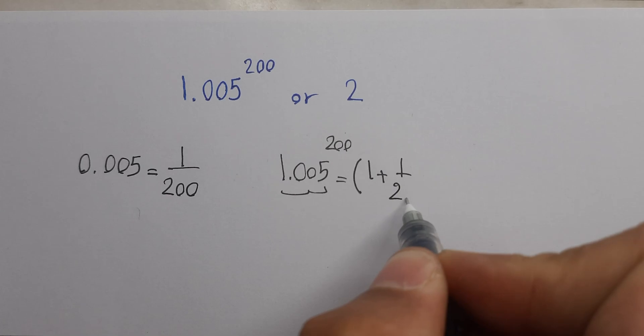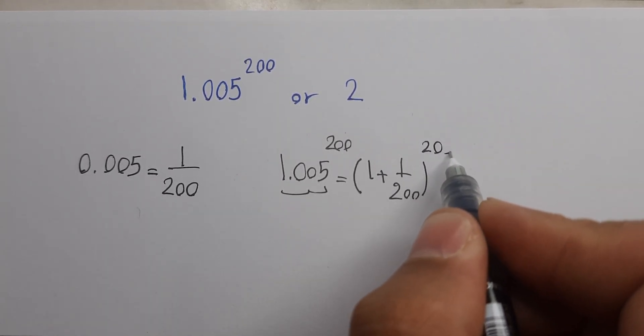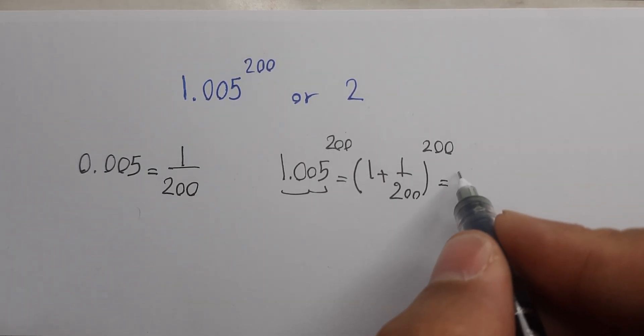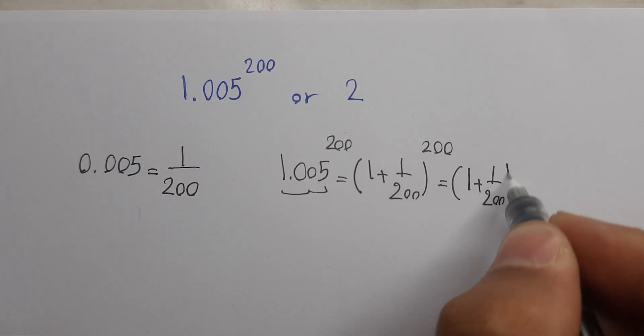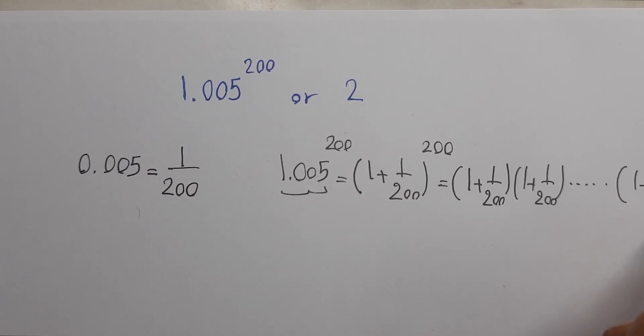This equals (1 + 1/200) times (1 + 1/200) times... times (1 + 1/200), multiplied 200 times total.